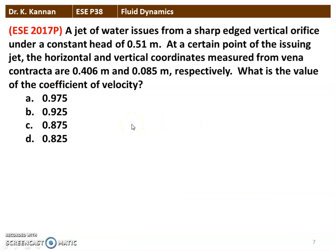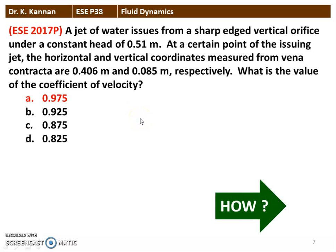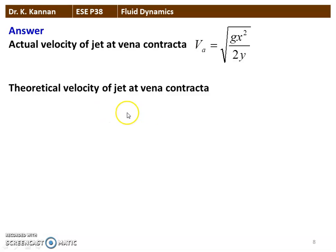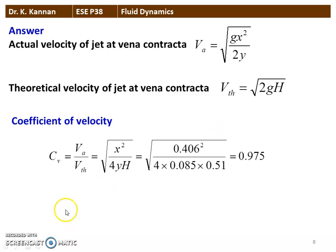The next question is from the 2017 question paper. A jet of water issues from a sharp-edged vertical orifice under a constant head of 0.51 m. At a certain point in the issuing jet, the horizontal and vertical coordinates measured from the vena contracta are 0.406 m and 0.085 m respectively. The coefficient of velocity Cv = √(x² / (4y·h)). Substituting x = 0.406 m, y = 0.085 m, h = 0.51 m gives Cv = 0.975. The theoretical velocity is V = √(2gh), and Cv equals actual velocity divided by theoretical velocity.